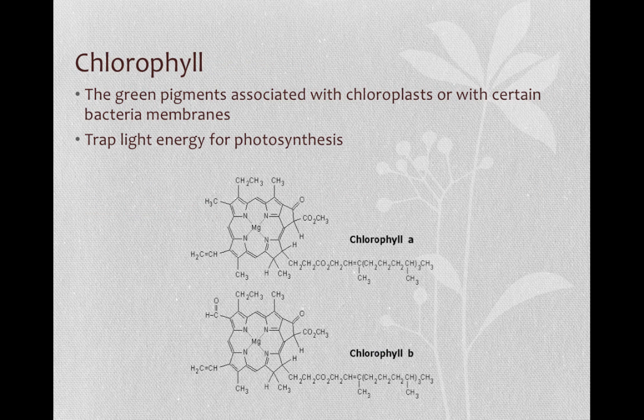Chlorophyll is the green pigment associated with chloroplasts and certain bacterial membranes that do photosynthesis. Chlorophyll traps light energy for photosynthesis. It's found in plants, photosynthetic bacteria which are called cyanobacteria, and photosynthetic protists, which are algae.